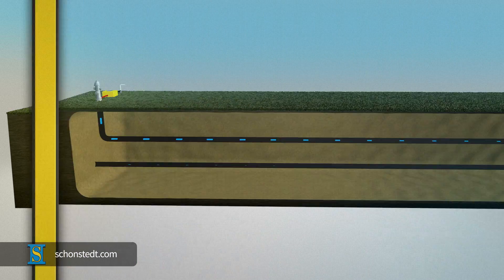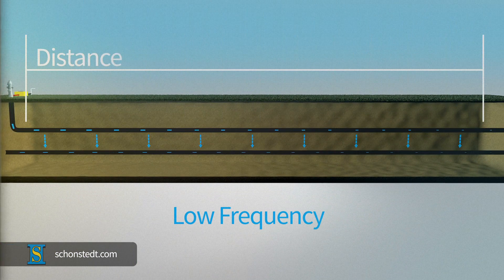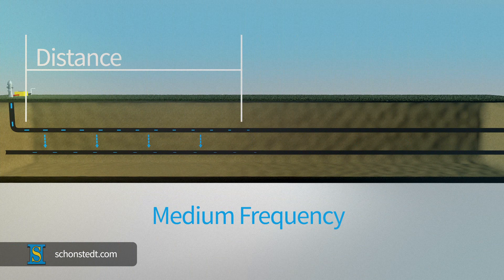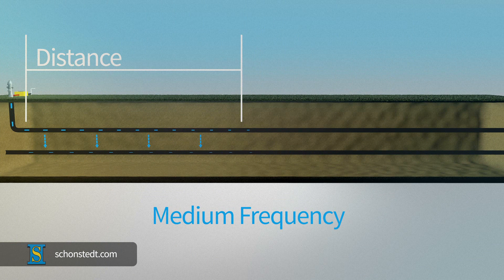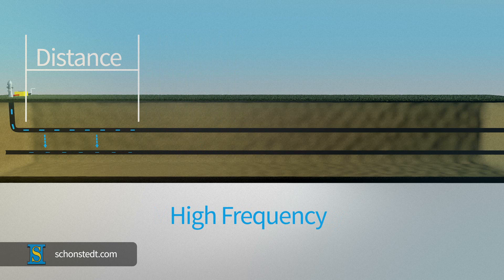As a rule, always start with the lowest frequency possible and increase as needed. And remember, at higher frequencies, the current will leak to the ground quicker, which may impact your ability to accurately locate.